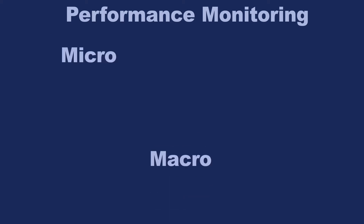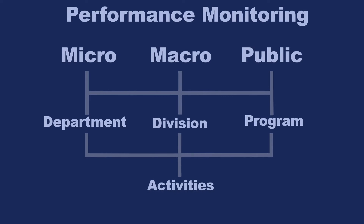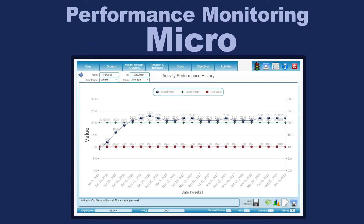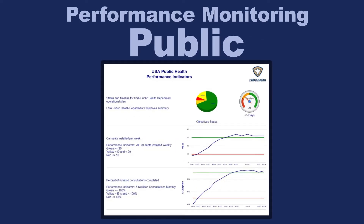Next, once the plans are developed and executing, we monitor the plans at every level in real-time. Plans can be monitored at the department, division, or program level, all the way down to a specific set of activities. At the micro level, you can see the performance history of any specific objective or activity. At the macro level, you can get a detailed snapshot of the overall performance of the department, division, office, or program — or any plan. And you can easily create interactive, public-facing webpages to graphically show the status of any or all of the micro or macro performance indicators.